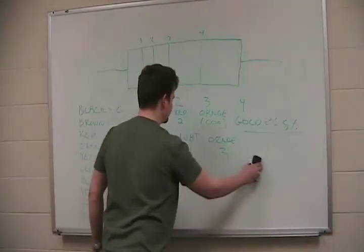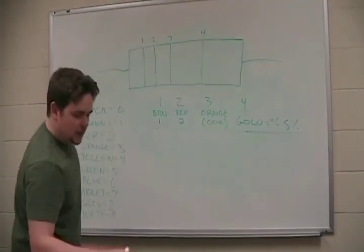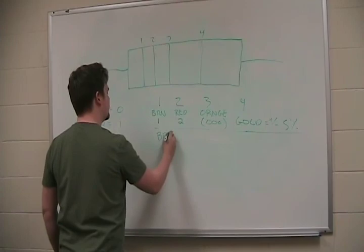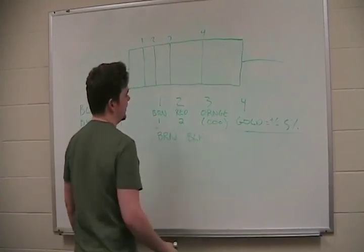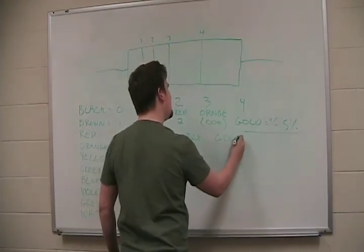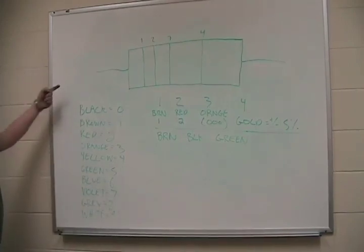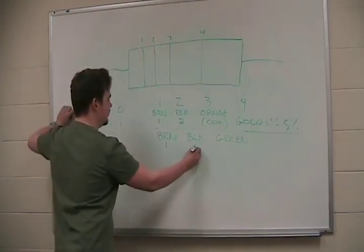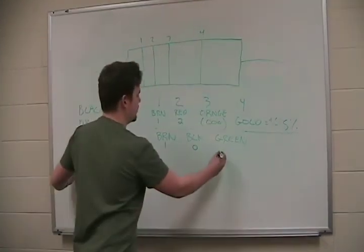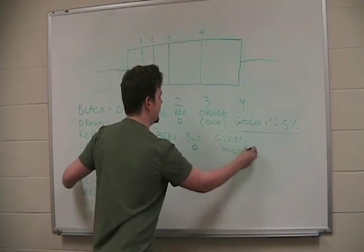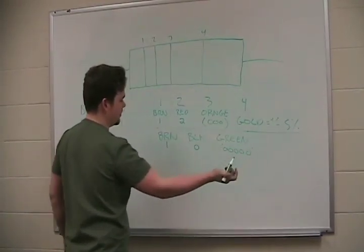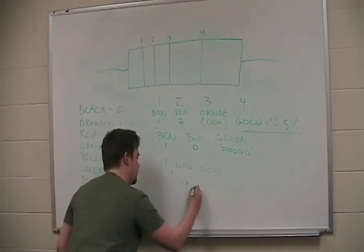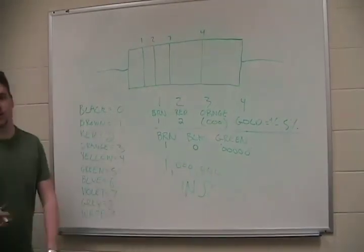We're going to keep doing this. We're going to do a couple more. I use this one all the time. I use brown, black, and green. We're going to do this together. Brown 1, black 0, green 5 zeros. 1, 2, 3, 4, 5. So, what do we get? 1 plus 6 zeros equals 1, 0, 0, 0, 0, 0, 0. Which is 1 mega ohms. 1,000,000 ohms is 1 mega ohms.